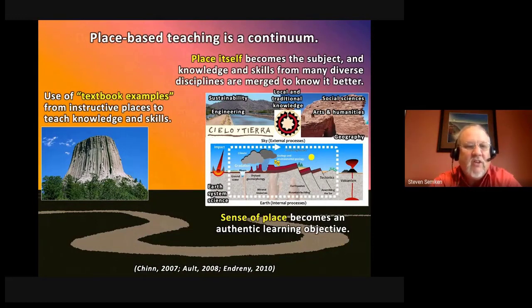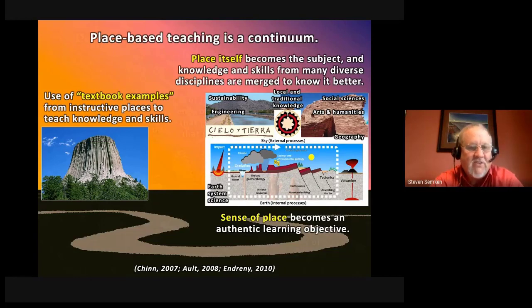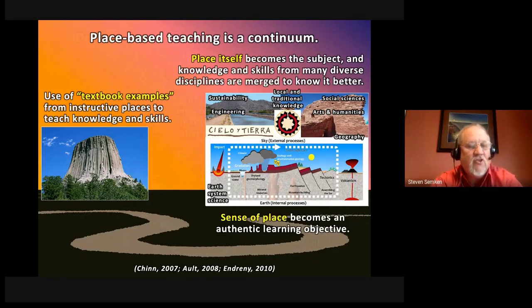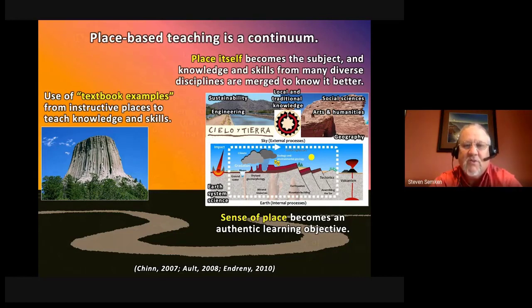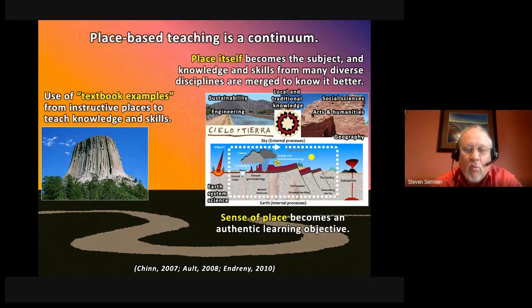It's important to know that place-based teaching is a continuum. You start by simply recognizing that the examples we use to teach geoscience are themselves places — using textbook examples from instructive places, identifying them as places, giving their names, and saying something about how important they are to the people who live there. That starts you on a trajectory toward the opposite end, where you can have a course, lab, or learning activity that's completely about place, where place becomes the subject and knowledge from many diverse disciplines emerges. In a course like that, sense of place becomes an authentic learning objective.